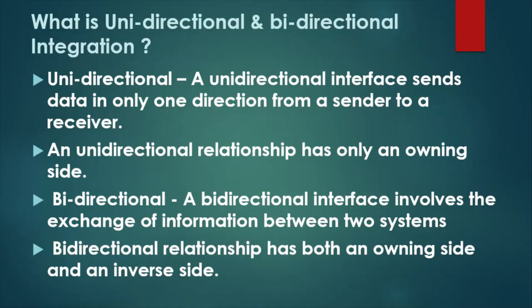Our second question is: what is unidirectional and bidirectional integration? A unidirectional interface sends data in only one direction — from a sender to a receiver — and has only an owning side, meaning it is single-way communication. A bidirectional interface involves the exchange of data between two systems; the sender can both send and receive data. In bidirectional integration, the source system can send data to the target system and vice versa — communication and data transfer happen on both sides.